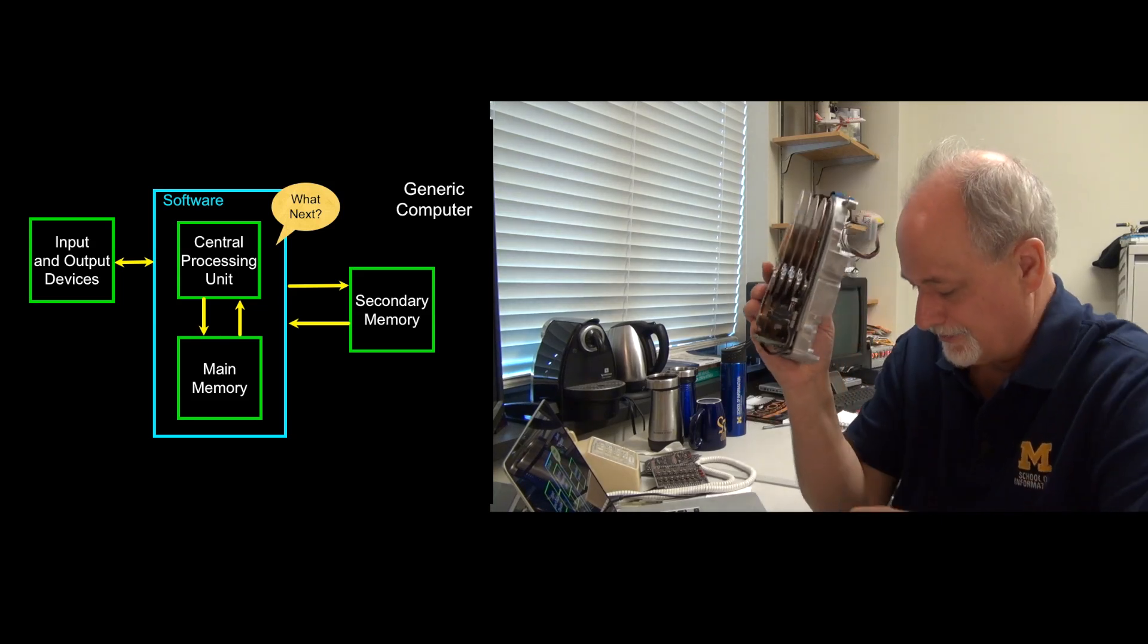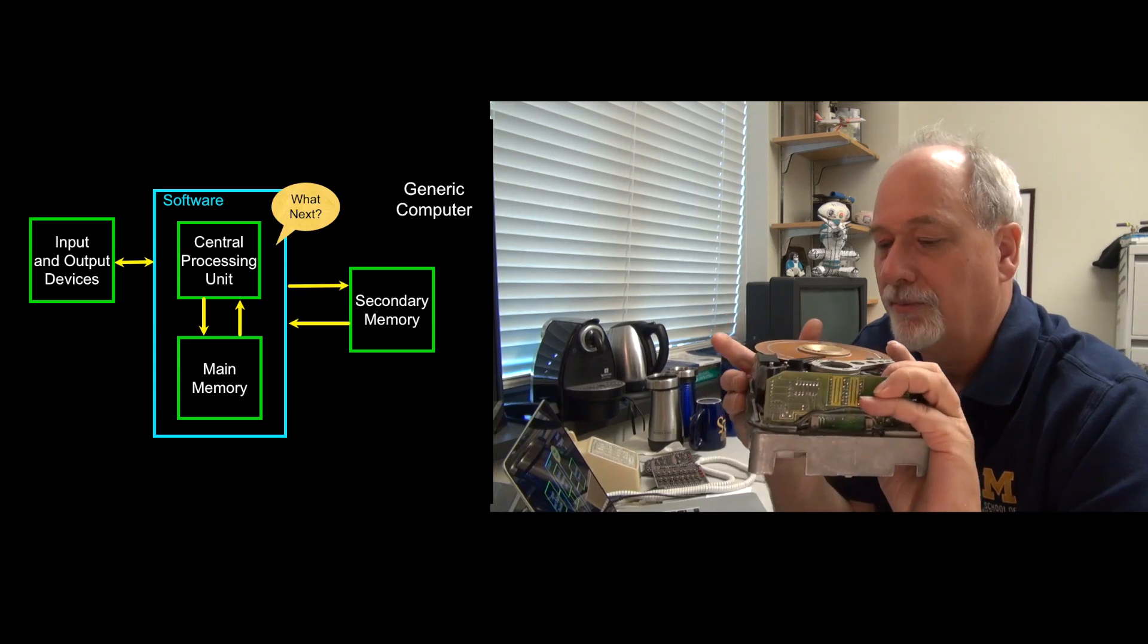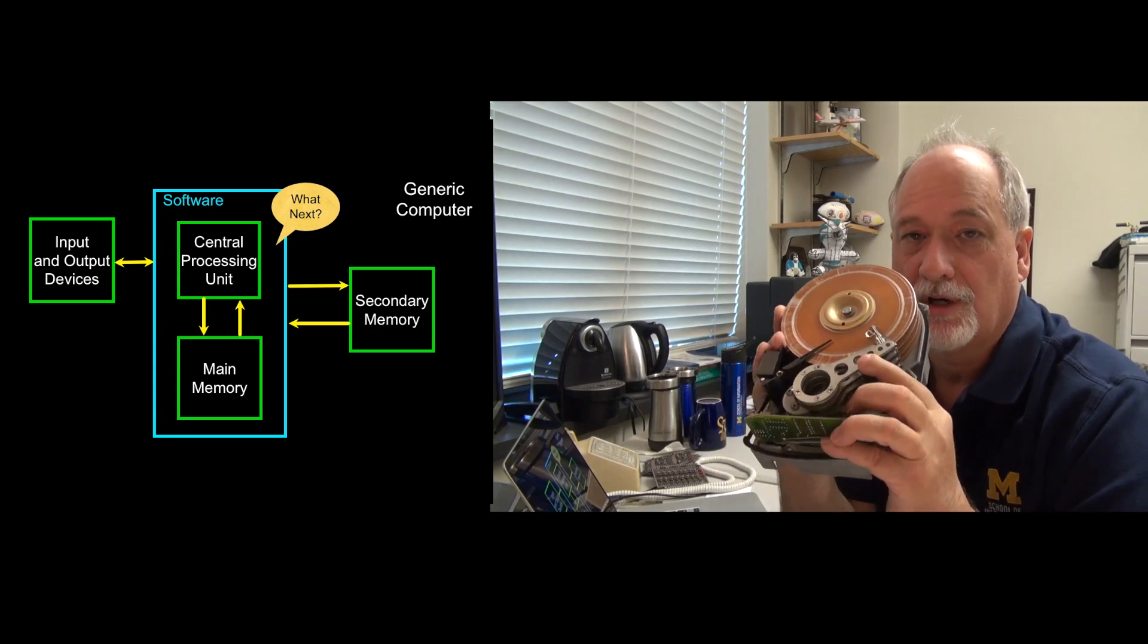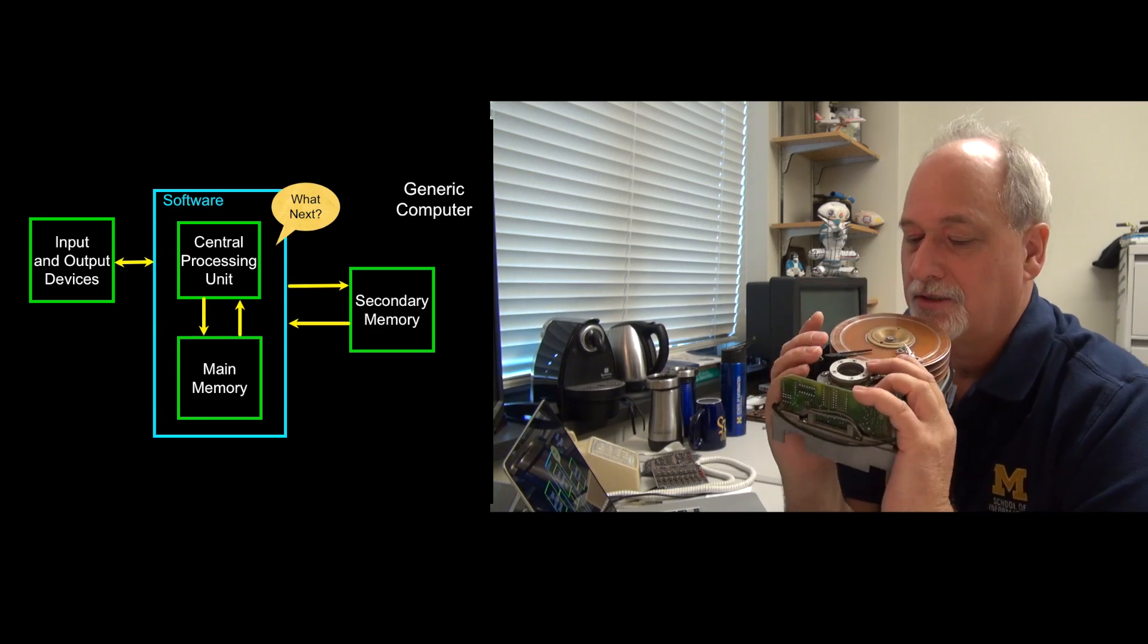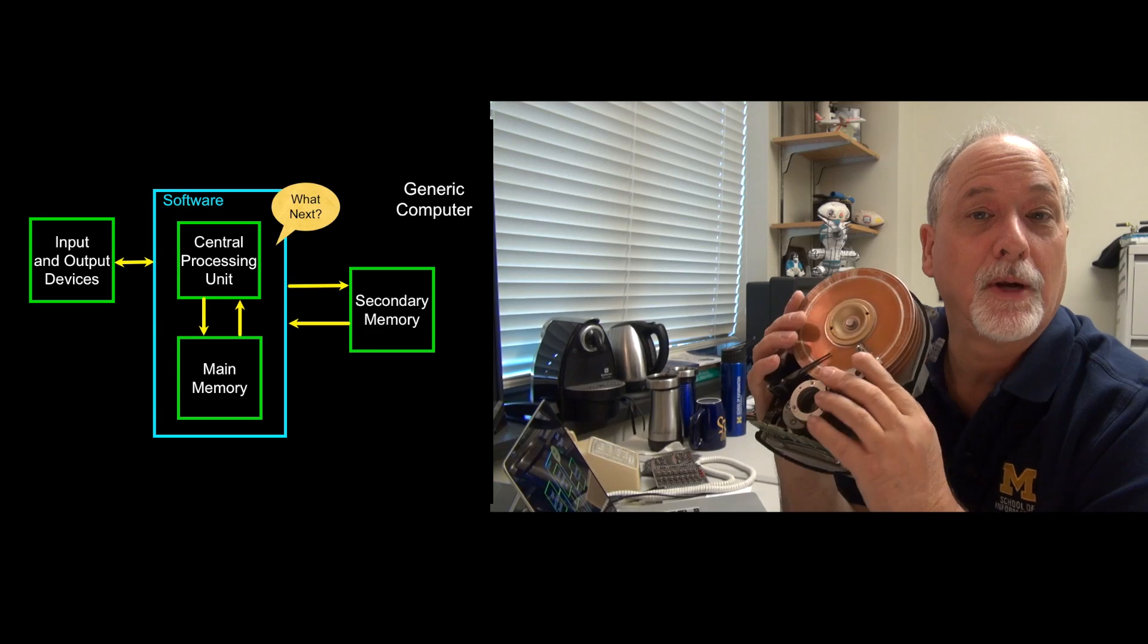And so to store files, like word processing files, or text files, or whatever, you got to store it on something that lasts a little bit longer. And so that's the purpose of the secondary storage, it's permanent. When the power's off, it stores it. Now this one here is in such bad shape that it isn't probably storing anything.